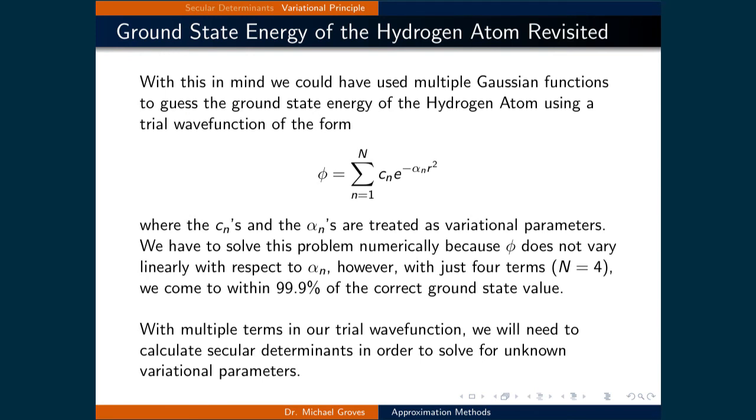With this in mind, we could have used multiple Gaussian functions to guess the ground state energy of the hydrogen atom using a trial wave function of the form phi is equal to the sum over n equals 1 to N of c sub n times e raised to the power of negative alpha sub n r squared,